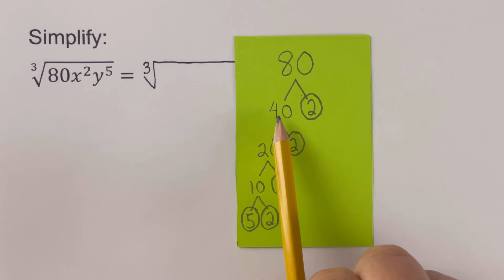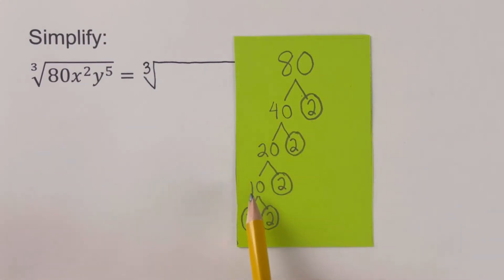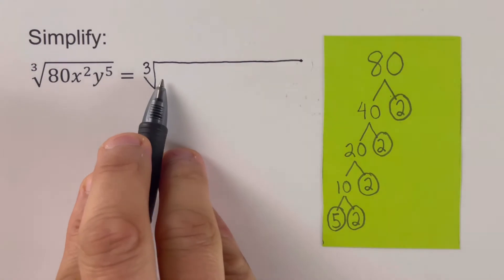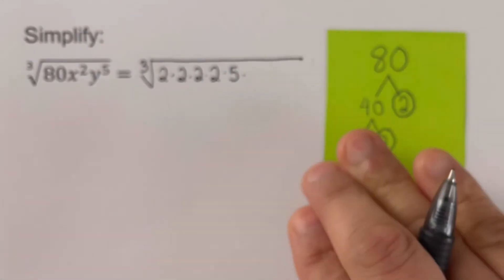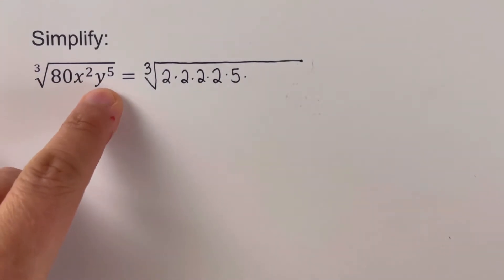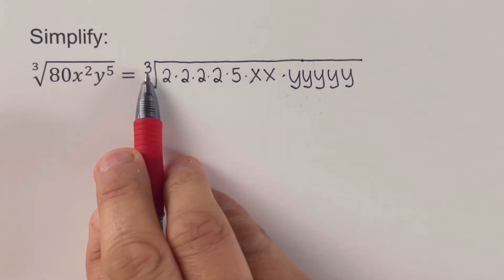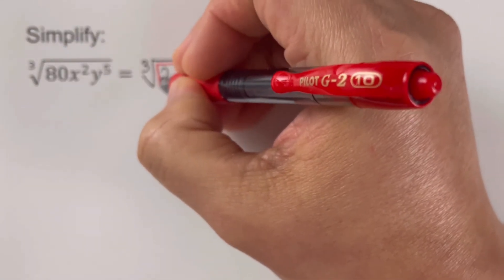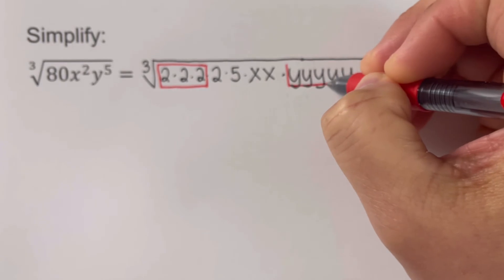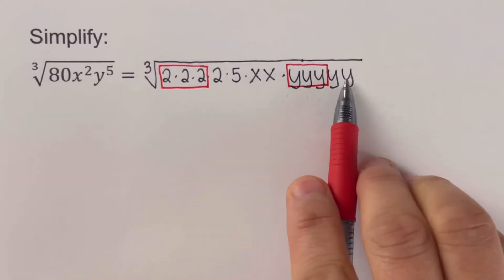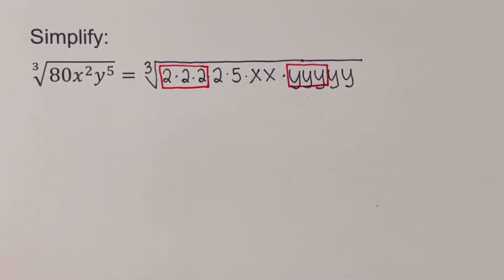Continuing: 20 divided by 2 is 10 times 2, and 10 divided by 2 is 5 times 2. So the prime factors of 80 are 2 times 2 times 2 times 2 times 5. I'll write those prime factors inside the radical. I also need to expand x squared and y to the fifth. The next step is to group the expanded form based on the index of 3, so we form groups of 3. This is one group of three 2s, and another group here. The x's and y's don't have enough to form a full group of three x's, and we cannot make a group of three y's from the leftover.